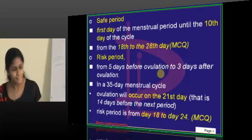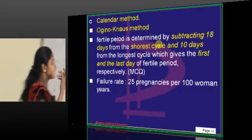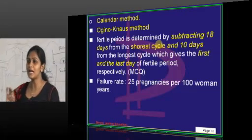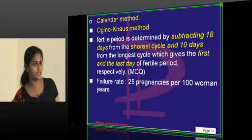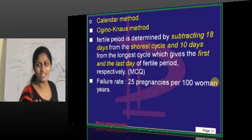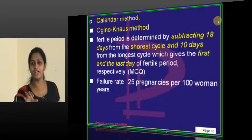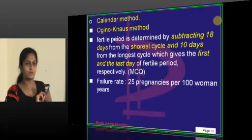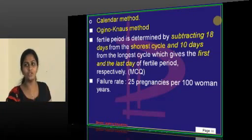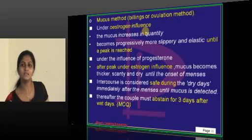This is what we have discussed — the risk period. Calendar method is otherwise called the Ogino-Knauss method. Remember, the failure rate of calendar method is 25 pregnancies per 100 women years — it has a high failure rate. For IUCDs, OC pills, and POP pills, failure rates are frequently asked. Write all failure rates together in one place on your page so you can remember them easily. Calendar method failure rate: 25. Coming to mucus method, otherwise called Billings method.